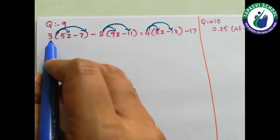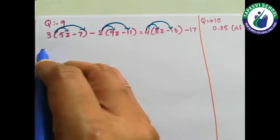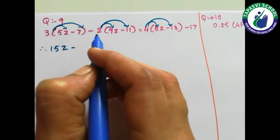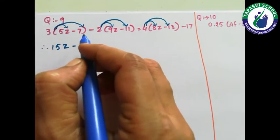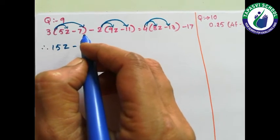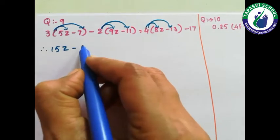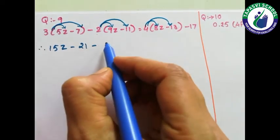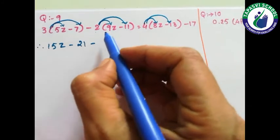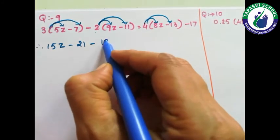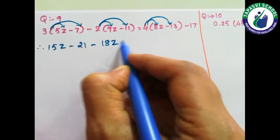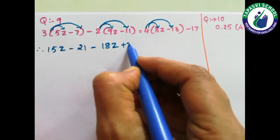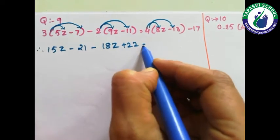So here: 5 threes are 15, 3 sevens are 21, minus plus minus, 9 twos are 18 minus, minus plus, 11 twos are 22.